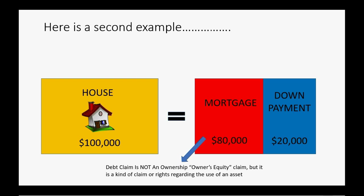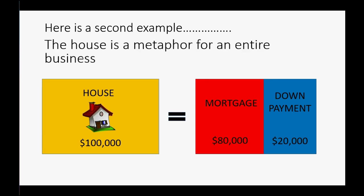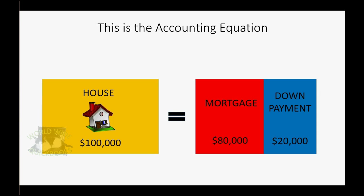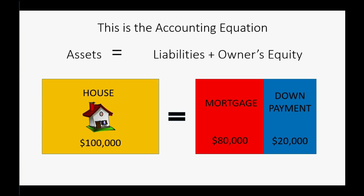A debt claim is a certain type of claim against the rights, usage, and ownership of the asset. If you had a restrictive mortgage, the bank has the right to tell you certain things, but the bank does not have the right to have their administrators come to your house at 2 o'clock in the morning and have a party, because that's not the type of ownership claim they have. The house is a metaphor for an entire business, and what we've just derived is the fundamental accounting equation: the assets of a house or an entire business must always be equal to the liabilities plus the owner's equity of that business.